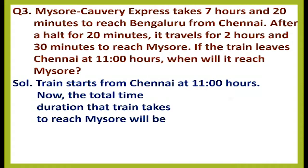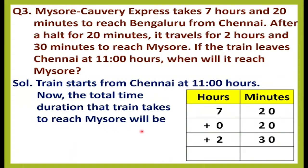First we need to find the total time duration the train takes to reach Mysore. We add 7 hours 20 minutes, plus 0 hours 20 minutes, plus 2 hours 30 minutes. Adding the minutes: 0 plus 0 plus 0 is 0; 2 plus 2 plus 3 is 7. Adding the hours: 7 plus 0 plus 2 is 9. So we get a total time duration of 9 hours 70 minutes.